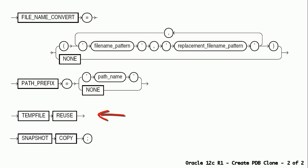The TEMPFILE REUSE clause can be used to instruct the database to format and reuse a temp file associated with the new PDB if it already exists. The SNAPSHOT COPY clause can be used only when the source PDB files are stored on Oracle ASM, cluster file system ACFS, or direct NFS client storage.